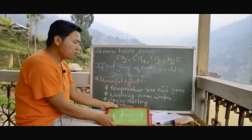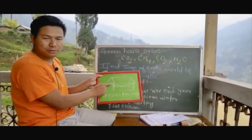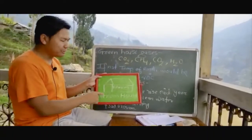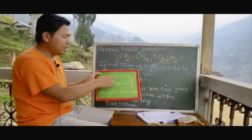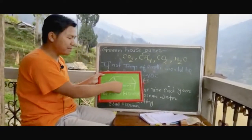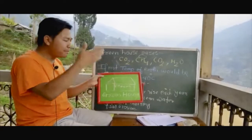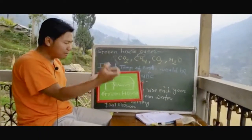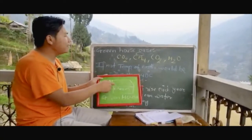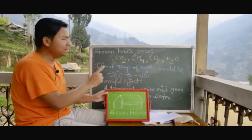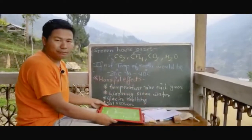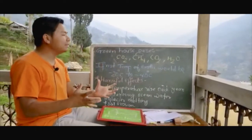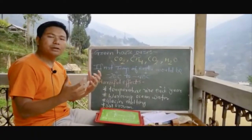Why do we call it the greenhouse effect? It is related to the agricultural greenhouse — a structure used to grow plants in cold places by maintaining a particular temperature inside. Heat from the sun enters but is trapped inside, keeping the plants warm. This is exactly the same phenomenon on the Earth's surface. This is the greenhouse effect, and the resulting rise in global temperature is known as global warming, which is an alarming issue in today's world.